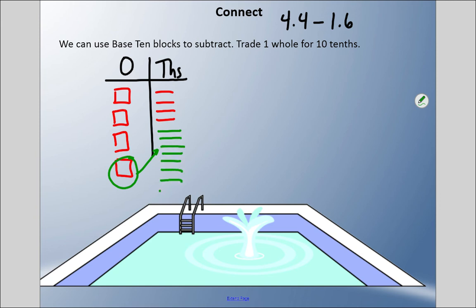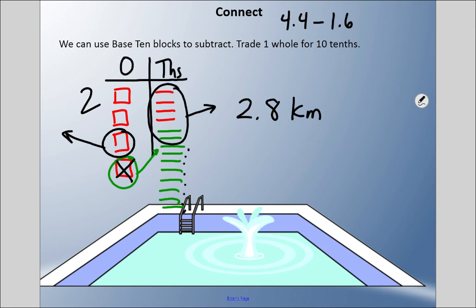Five, six, seven, eight, nine, ten. Now I can take away 1.6. I'm going to take this one away and take 6 tenths away. What am I left with? I'm left with 2 ones and one, two, three, four, five, six, seven, eight tenths. So 2.8 kilometers is how much more he swam on Thursday.